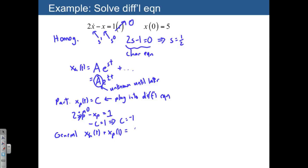So we end up with A e to the 1 half t minus 1 as our general solution for x of t, except we still don't know what A is. And the way we're going to solve for that is we're going to use the initial conditions to solve for A.